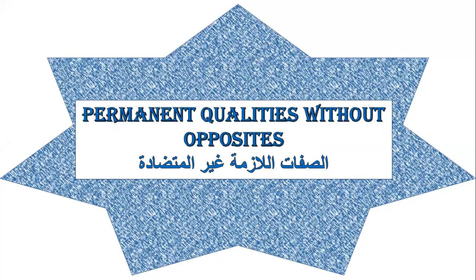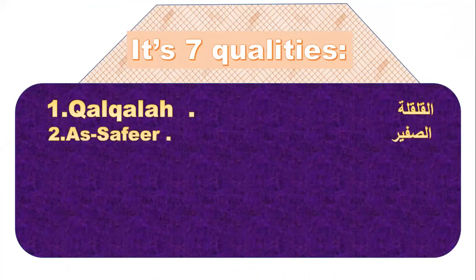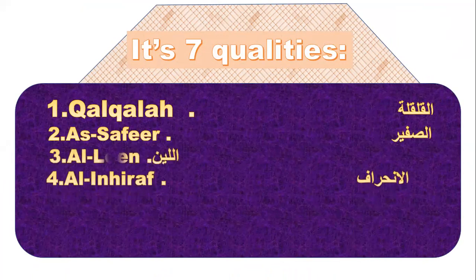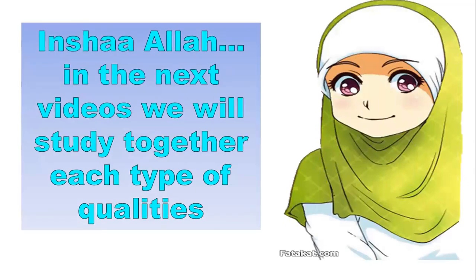The second type is permanent qualities without opposites — Asifat al-lazimah ghair al-mutadadda. There are seven qualities in this category. Inshallah, in the next videos we will study together each type of qualities.